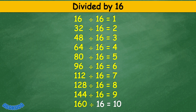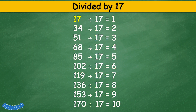Divided by 17. 17 divided by 17 equals 1. 34 divided by 17 equals 2. 51 divided by 17 equals 3. 68 divided by 17 equals 4. 85 divided by 17 equals 5. 102 divided by 17 equals 6. 119 divided by 17 equals 7. 136 divided by 17 equals 8. 153 divided by 17 equals 9. 170 divided by 17 equals 10.